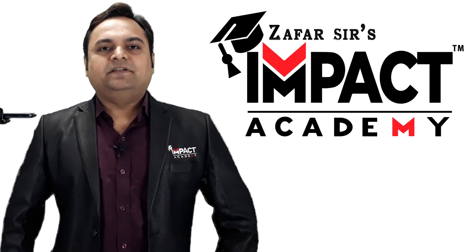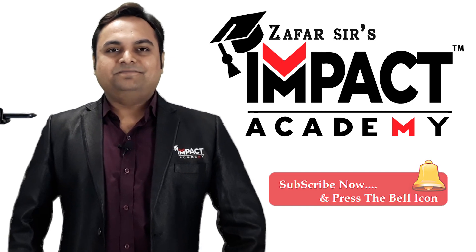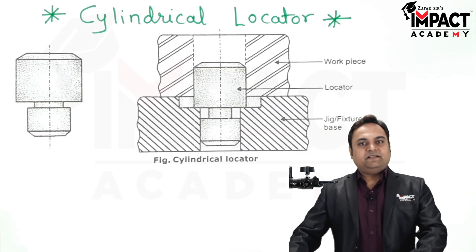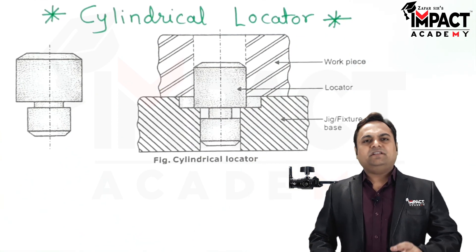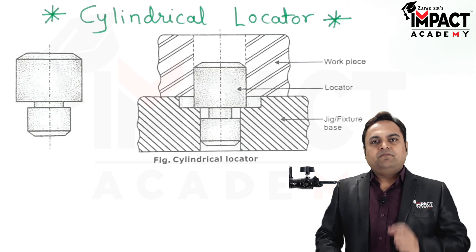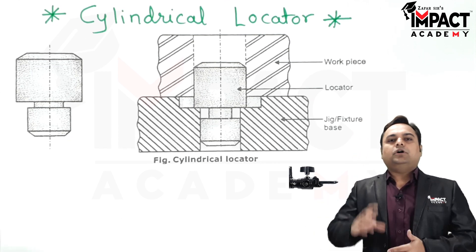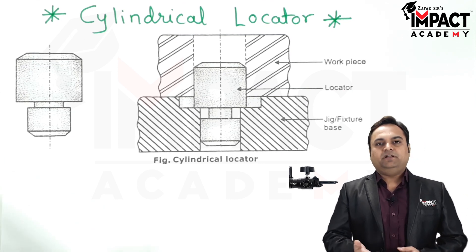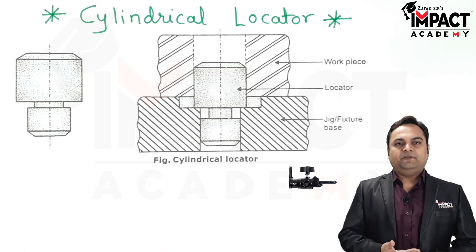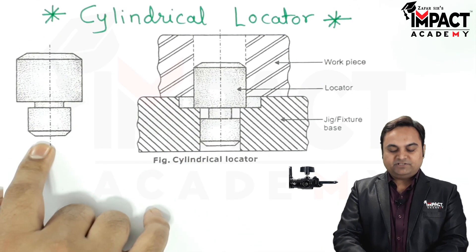In this video I'll be explaining cylindrical locators. A locator is a device which is used in the body of a jig or fixture so that the workpiece is mounted over that locator, and we get a proper relationship between the jig or fixture and the workpiece in order to perform any kind of machining operation. Here is a simple cylindrical locator as shown in this diagram.